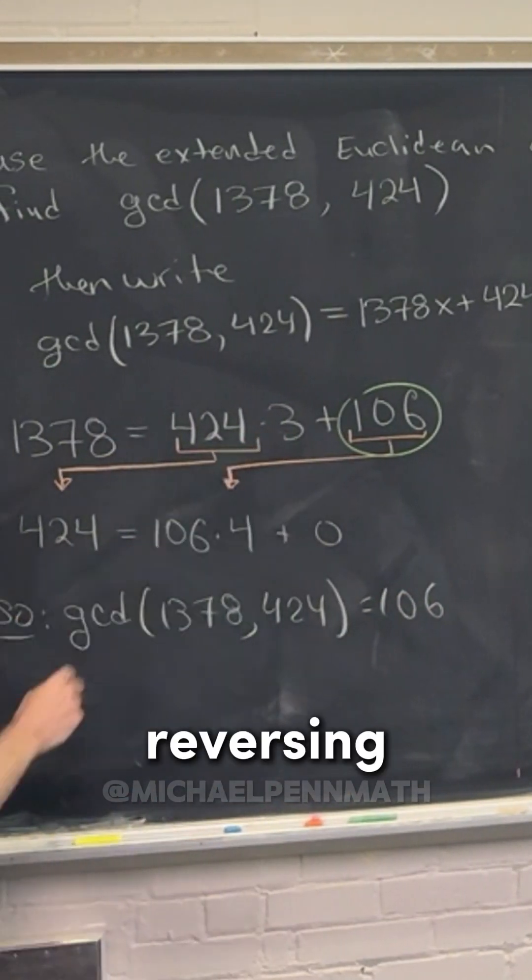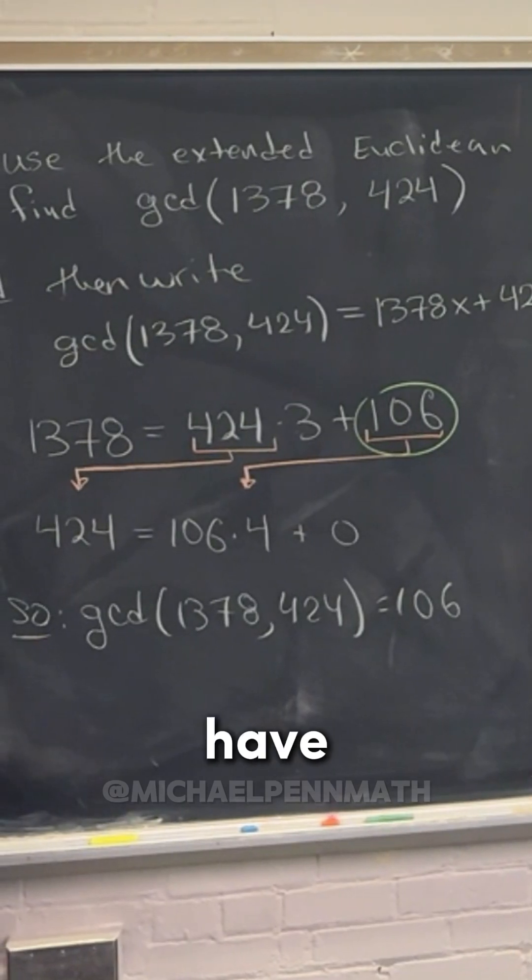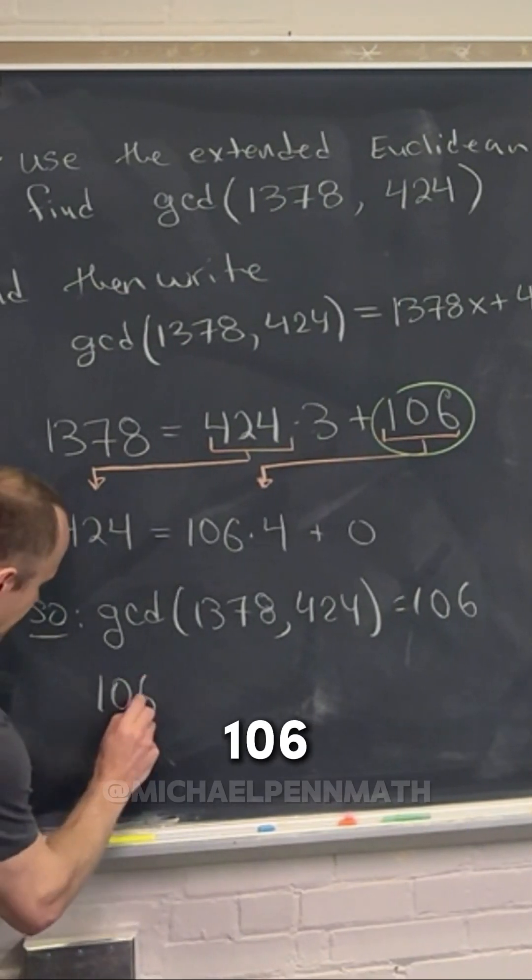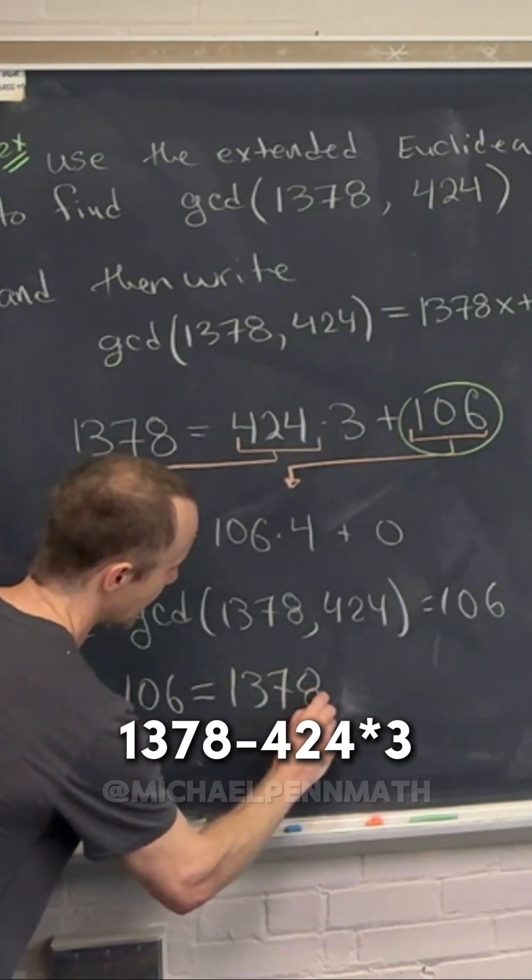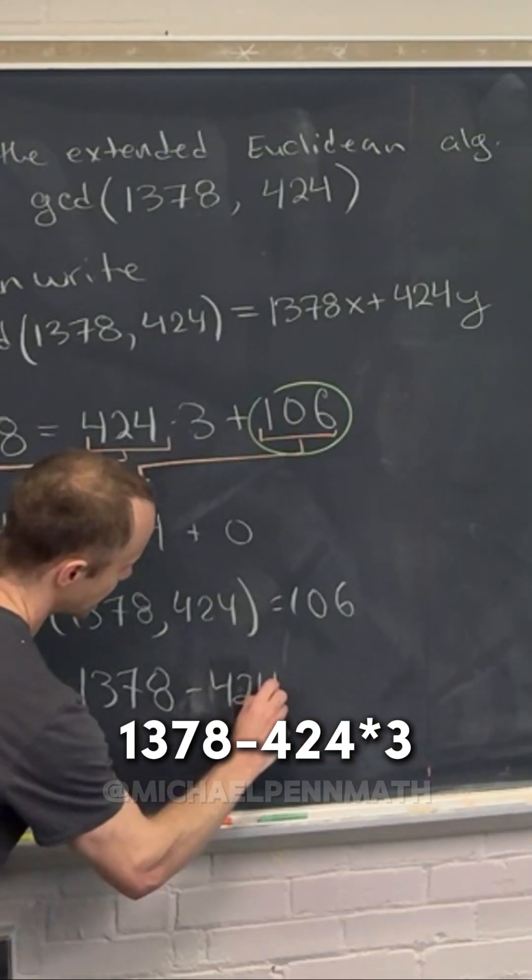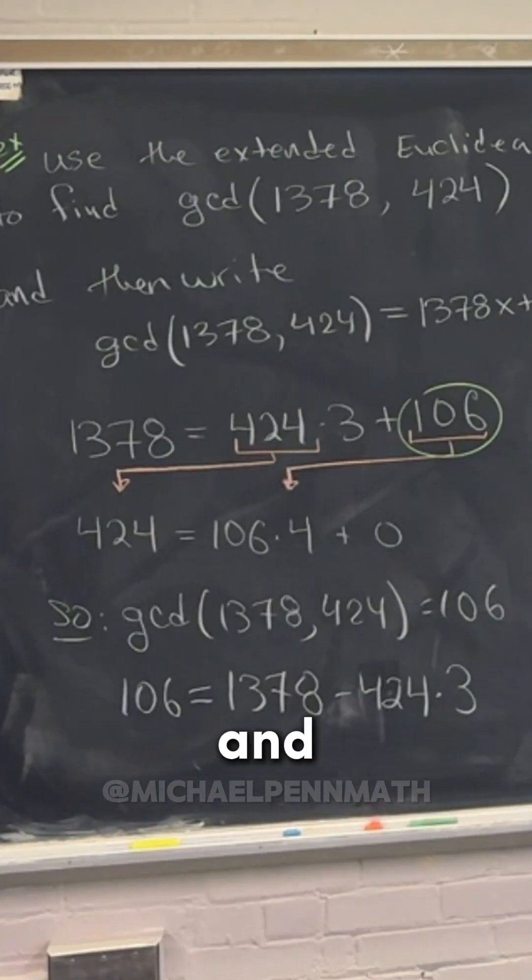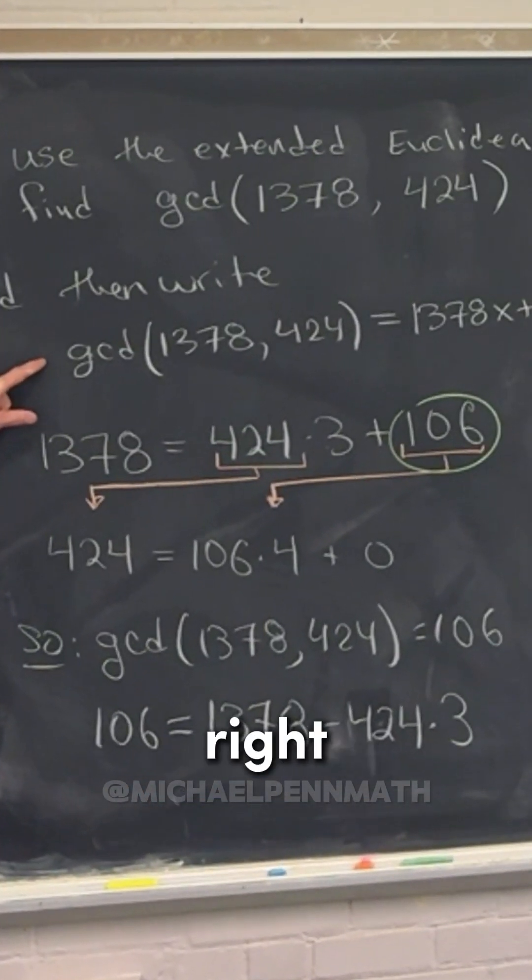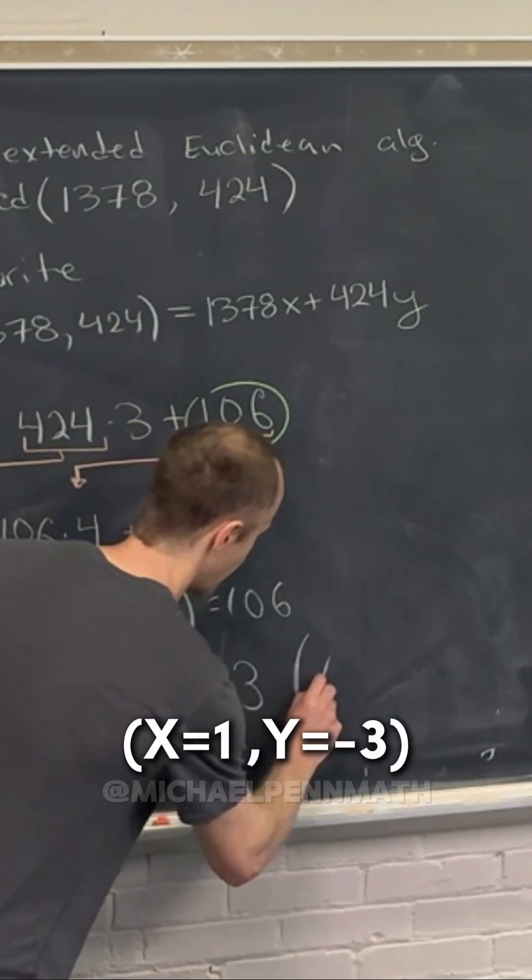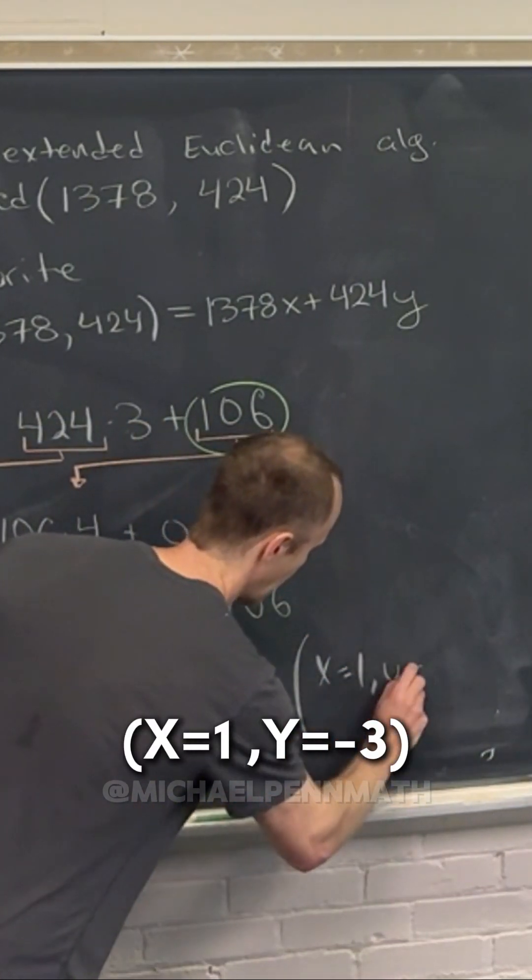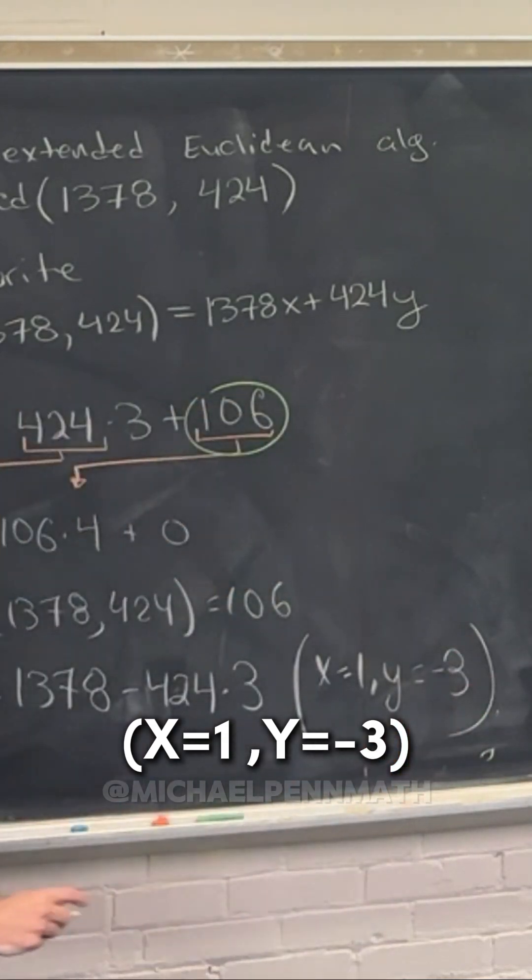And then by reversing this equation right here, we have 106 equals 1378 minus 424 times 3. That would be solving this equation with x equals 1 and y equals negative 3, right?